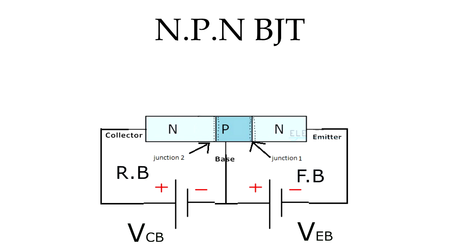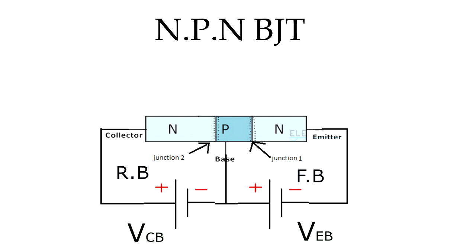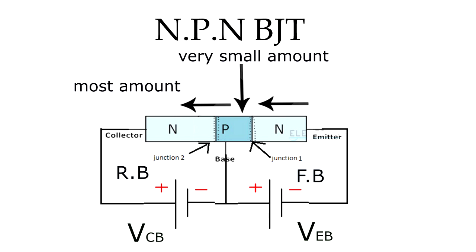Because of the reduction in the potential barrier at junction J1, electrons move from the emitter region to the base and recombine with holes in the base region. P-type semiconductor material has more holes than electrons, but the base region is very small and only lightly doped. Because of that, most electrons pass to the collector region and only a very small amount of electrons from the emitter recombine in the base.